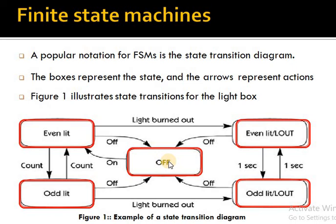The even and odd lights turn on and off based on the count number — how many times the count button has been pressed. Initially the count is zero, so when we turn on, the even light will be on. When we press the count button once (count = 1, odd number), the odd light will be on. When we press count again (count = 2, even number), the even light comes on. This cycle continues — odd and even alternate as the count button is pressed.